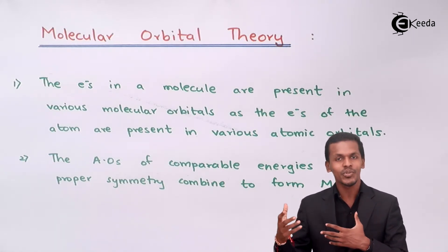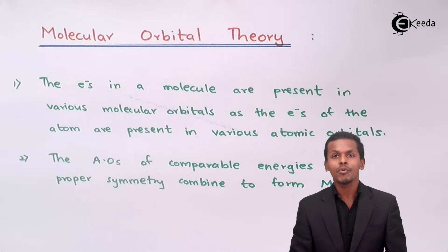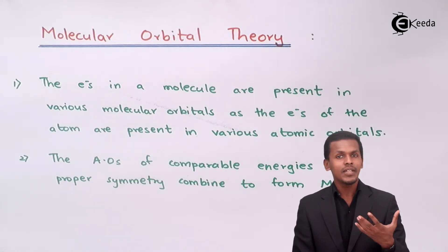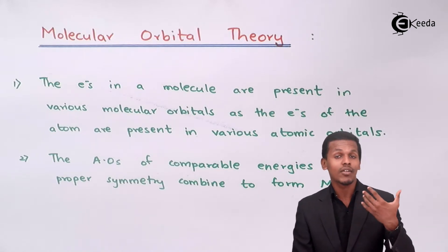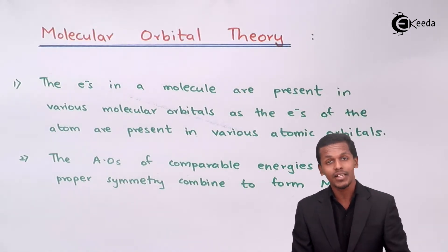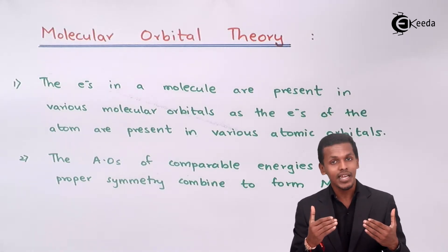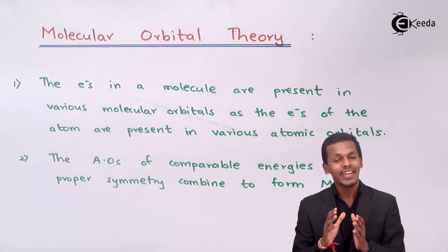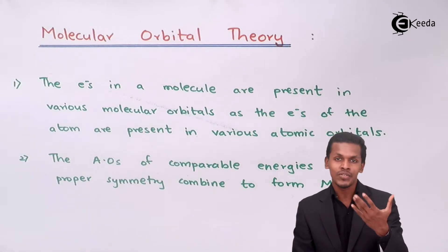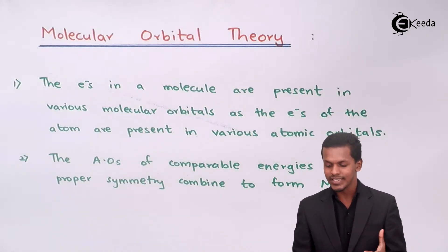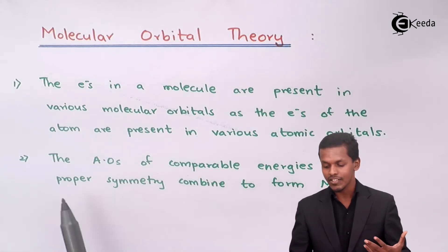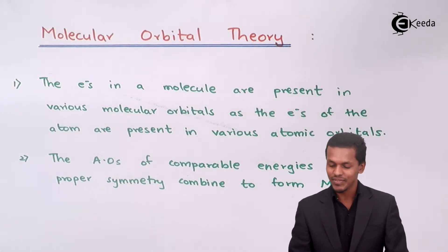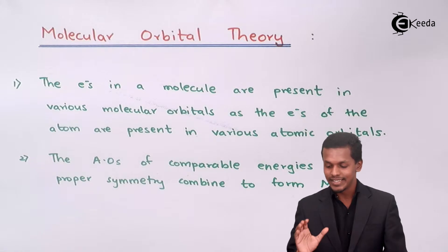For example, when talking about lithium, its outermost shell is 2s. The 2s orbital of one lithium atom will combine with the 2s orbital of another lithium atom because they have similar energy. This allows them to combine and maintain symmetry, forming a molecule. There are further examples to be discussed in future lectures that will make this second postulate even clearer.